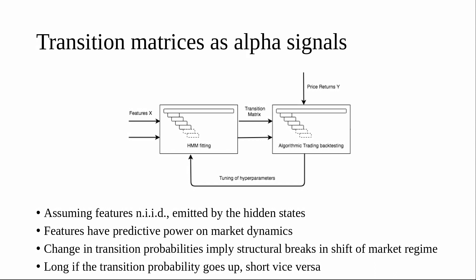You can see in this flowchart: you have the features of the market, which could be like bid-ask spread or implied cross-rate arbitrage. We feed the features of the predictive market to the model, and the change in the transition matrix gives us what we call trading signals or alpha signals. The pipeline feeds into the transition matrix, and then we back-test this algorithm with a simple trading strategy — if the transition probability goes up, we go long, and short vice versa.